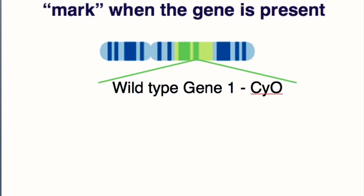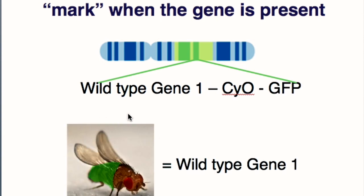These abnormal phenotypes can be very useful because they can be linked to another gene so that you can see when that gene is mutated or when the gene is wild type. Here is a depiction of a chromosome with a wild type gene number one and attached to it is curly wings CYO. Whenever this wild type gene is expressed, so is curly wings. This is a depiction of a chromosome that has the wild type gene with curly wings and GFP — this is the type of linkage we have on our balancer chromosome. Whenever you see curly wings and a green glowing fly, you know that fly also has at least one copy of the wild type gene.